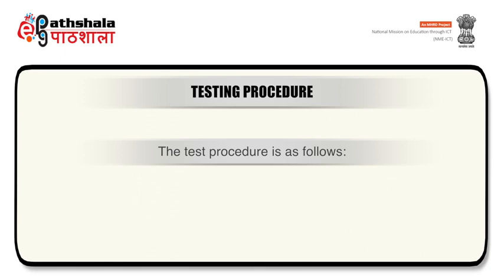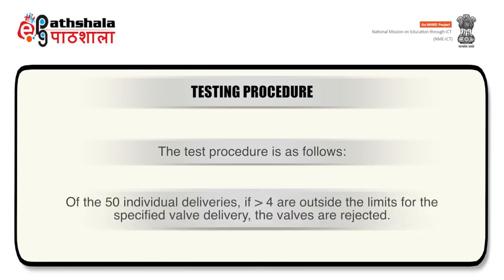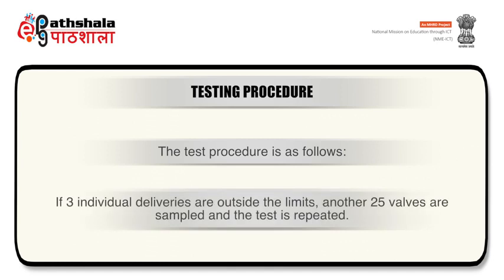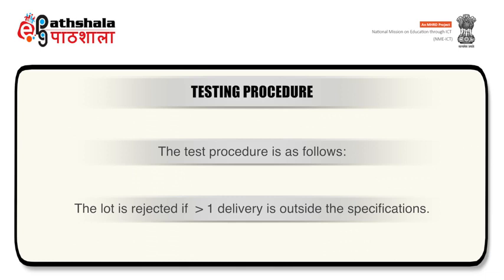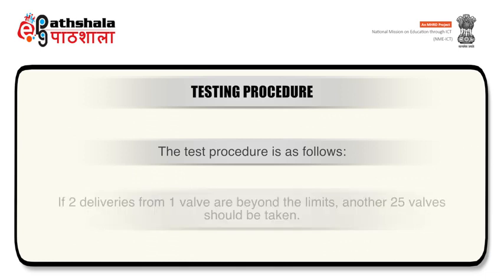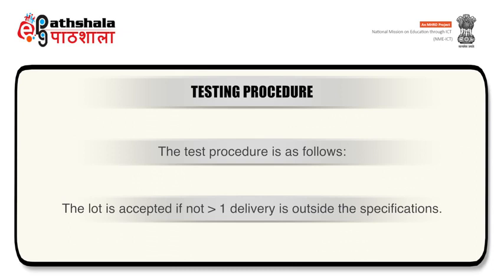The test procedure applies to two categories of metered aerosol valves: limits of ±15% for valves delivering 54 microliters or less, and limits of ±10% for valves delivering 55 to 200 microliters. Valves are rejected if out of 50 individual deliveries, 4 or more are outside the limits for the specified valve delivery. If three individual deliveries are outside the limits, another 25 valves are sampled and the test is repeated. The lot is rejected if more than one delivery is outside the specifications. If two deliveries from one valve are beyond the limits, another 25 valves should be taken. The lot is accepted if not more than one delivery is outside the specifications.